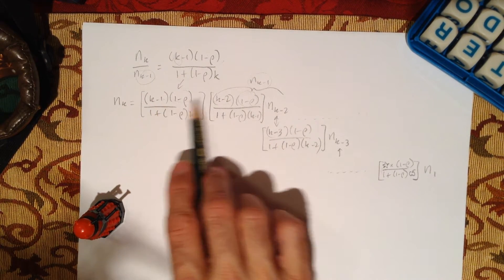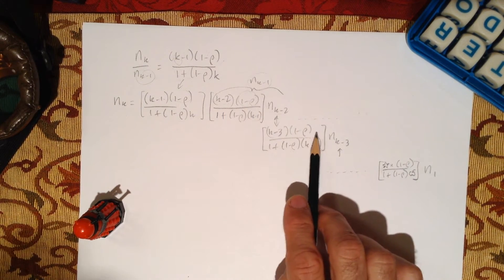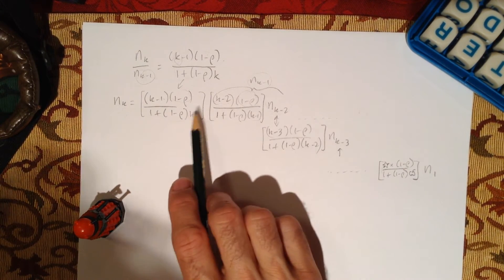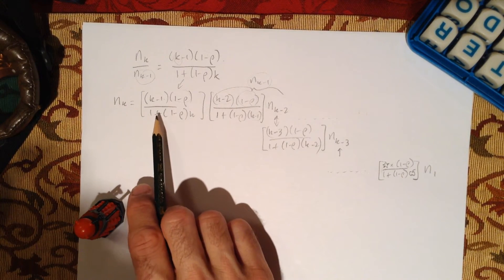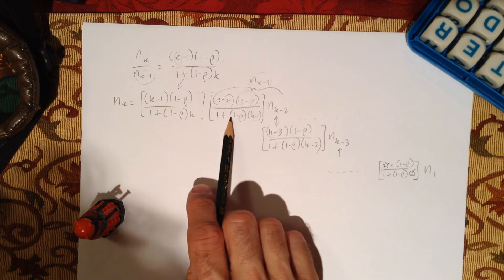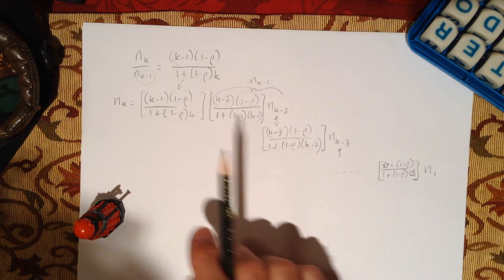We have the factors across the top: k minus 1, k minus 2, k minus 3. So there's clearly a factorial starting on top. 1 minus rho, 1 minus rho, so that's going to be a simple power of 1 minus rho. You have to figure out how many times. On the bottom we have a slightly different thing: 1 plus a fraction times k, 1 plus another fraction times k. That's a bit tricky to deal with.